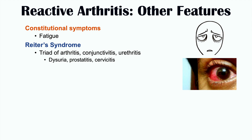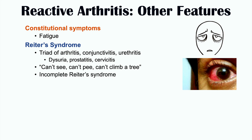More specific symptoms include dysuria (burning sensation when urinating), prostatitis (inflammation of the prostate gland), and cervicitis (inflammation of the cervix), which can occur with sexually transmitted diseases. A helpful mnemonic to remember Reiter's Syndrome is 'can't see, can't pee, can't climb a tree' — can't see due to conjunctivitis, can't pee due to urethritis, and can't climb a tree due to arthritis. If only two of the three features are present, it is referred to as incomplete Reiter's Syndrome.